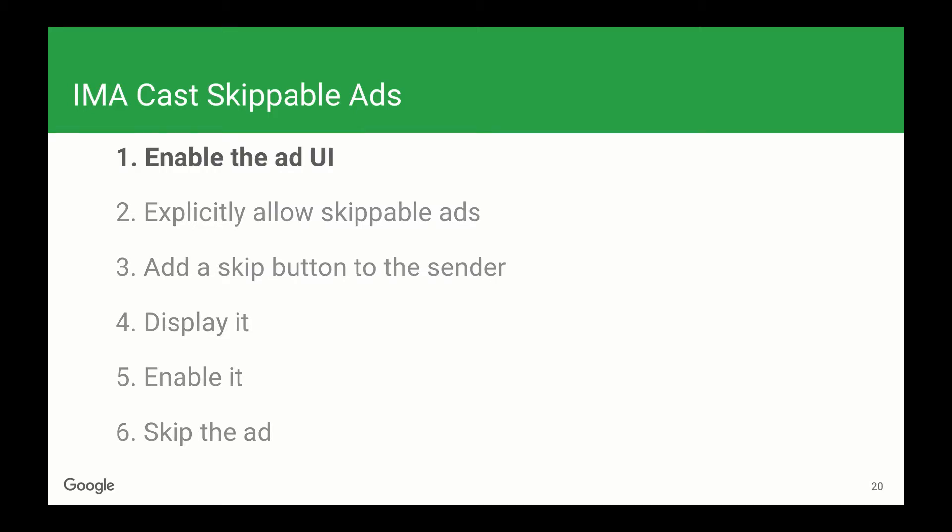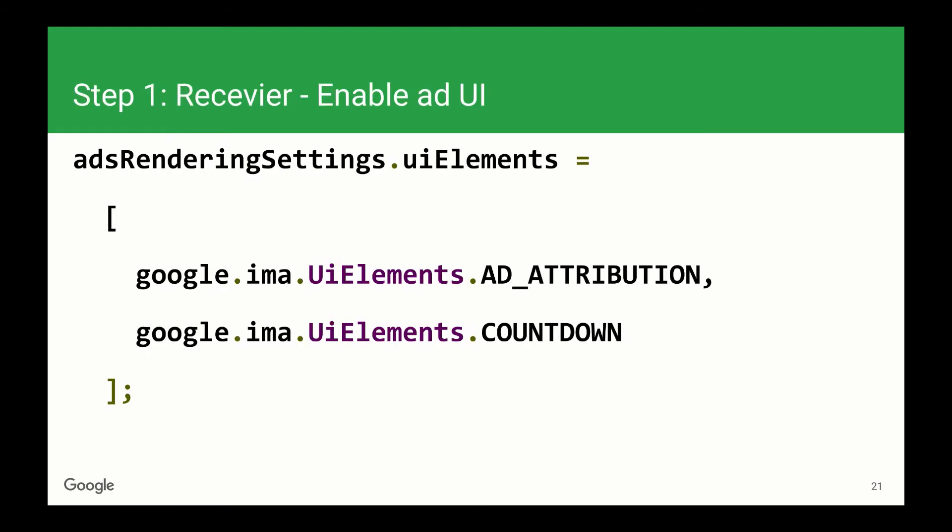So let's start with step one, enabling the Ad UI. To do this, we just have to add this one line of code to our receiver. This enables ad attribution and the countdown timer in the Ad UI, both of which are required for skippable support. You'll notice that we're not enabling a skip button here — that's because the IMA SDK handles that for us. It will automatically show or hide the skip button, depending on whether the ad we get back is skippable or not.